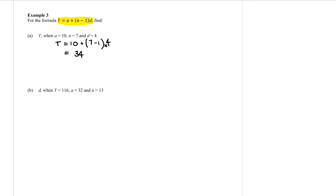In part b, this time we're trying to find little d. We're told that capital T is 116, a equals 32, and n equals 13. Subbing those numbers into the formula: T is 116, then equals — the little a is 32 — plus bracket n which is 13, take away 1, close bracket, and then that little d which we need to find. The only thing in those brackets is numbers, so we can subtract them. So we have 116 equals 32 plus 12d.